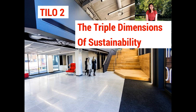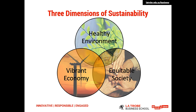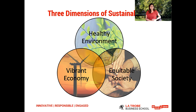Now let's turn our attention to the second topic — the triple dimensions of sustainability. The three pillars of sustainability are a powerful tool for defining the complete sustainability problem. This consists of at least the economic, social, and environmental pillars. If any one particular pillar is weak, then the system as a whole is unsustainable.